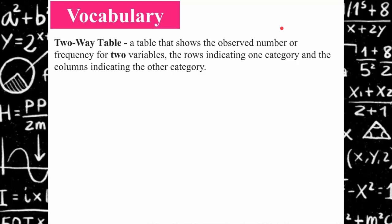For example, you may be looking at whether somebody is male or female and whether they prefer vanilla or chocolate ice cream. It requires that you have two different pieces of data from each person that was surveyed — whether they're male or female, and whether they prefer vanilla, chocolate, or strawberry. It's not required that there are only two answers; you have to have two pieces of information.